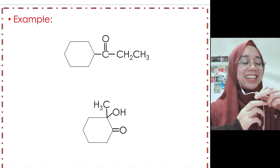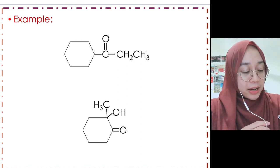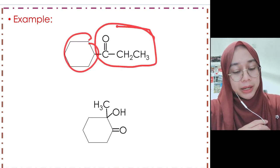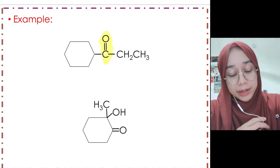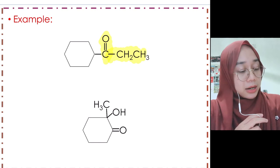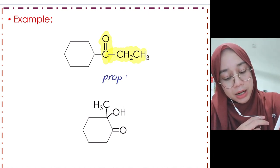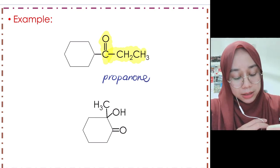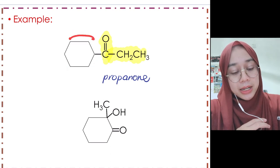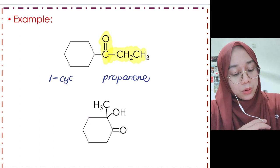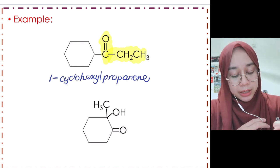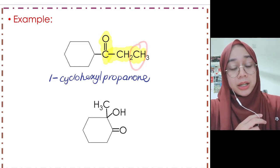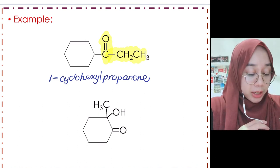For a ketone with a ring attached to an external chain: we prioritize the chain that contains the functional group C=O as the parent. The longest chain outside has three carbons — 'propanone'. The ring has six carbons — 'cyclohexyl' — attached at carbon number one. Full name: 1-cyclohexylpropanone. We must specify position 1 because the cyclohexyl could also be at position 2 or 3.